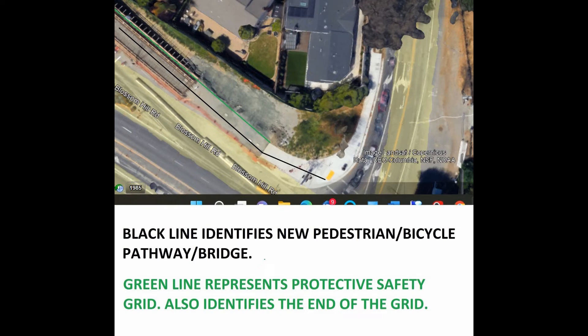The aim of this video is to communicate some privacy concerns of a family or residential property. These concerns arise as pedestrians cross a bicycle bridge, a pedestrian pathway, and can look into their backyard and into their house. This video aims to show the angles and the view and communicate the concerns of this family.